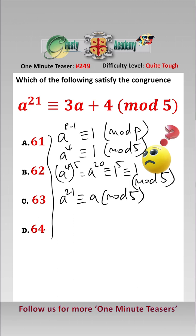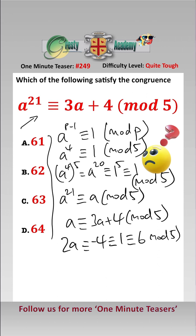So we can reduce this equation to a is equal to 3a plus 4 mod 5. That is, 2a is equal to minus 4, which is equal to 1, which is equal to 6 mod 5.